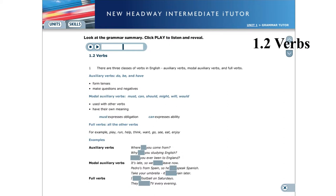Full verbs are all the other verbs in English. For example: play, run, help, think, want, go, see, eat, enjoy.